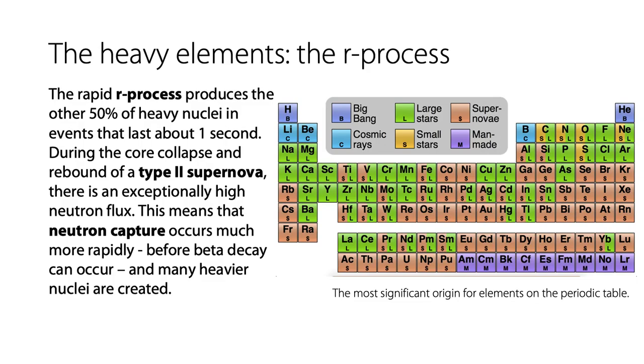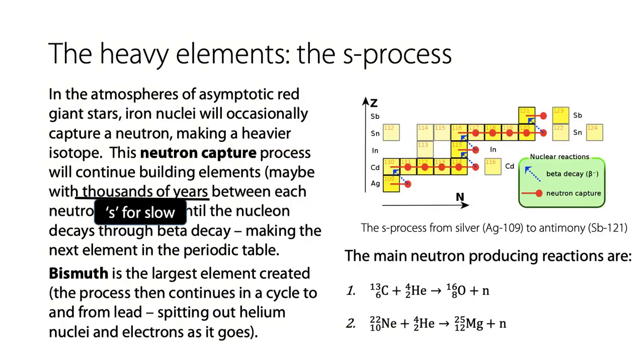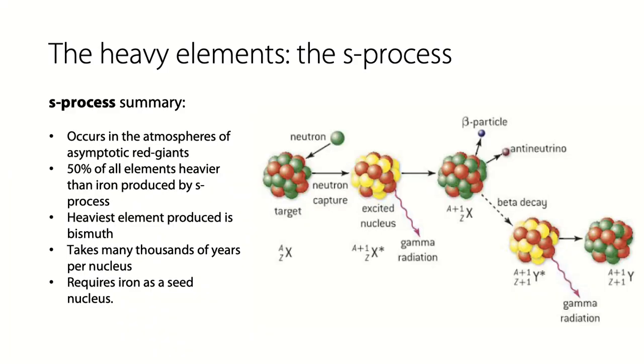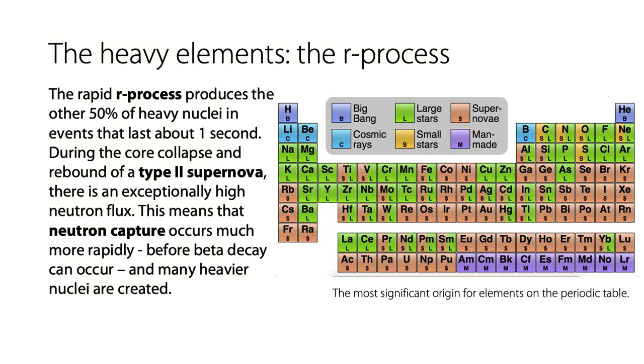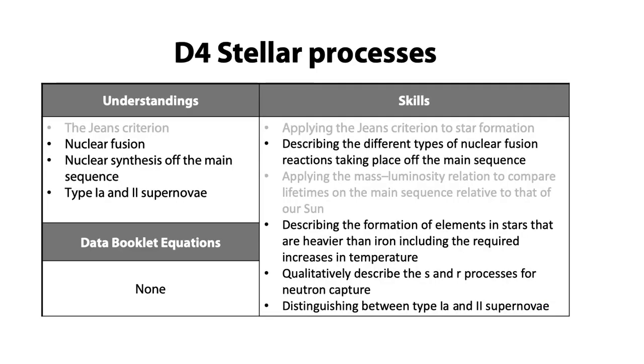The three processes are the R process, the S process, and supernova. The S process is slow. Things up to iron and less than iron are mostly made through the whole process of just stars, nuclear fusion in the core of a star.